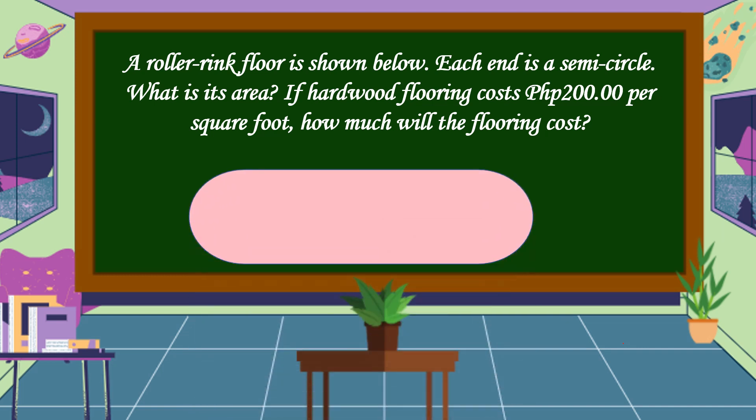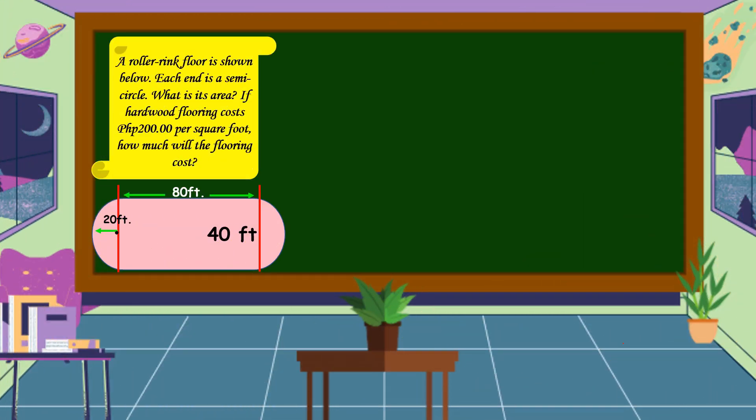This is the roller rink floor. To solve this problem, we are going to use the four-step plan.